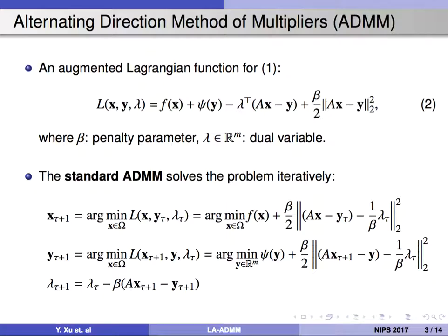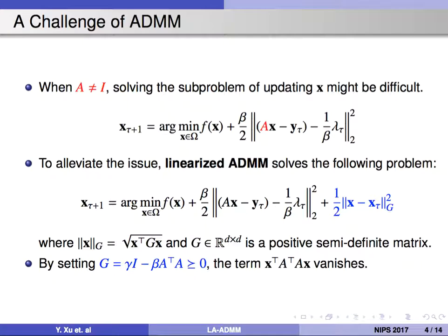The standard ADMM solves the problem by updating the solution iteratively. A challenge of ADMM is that when A is not equal to identity matrix, then solving the subproblem of updating X may be difficult.